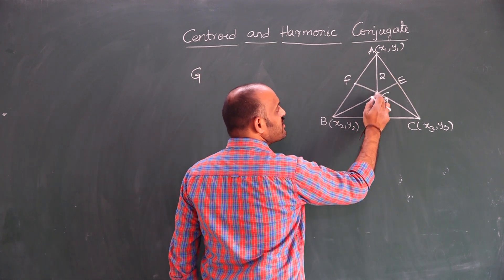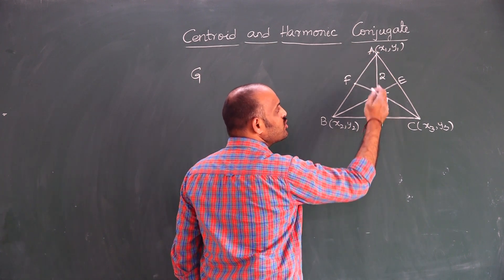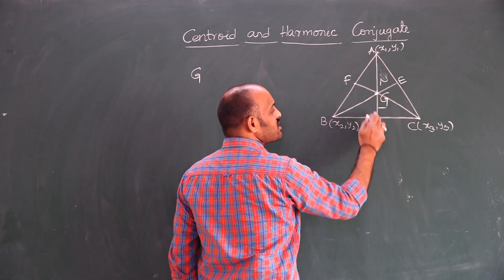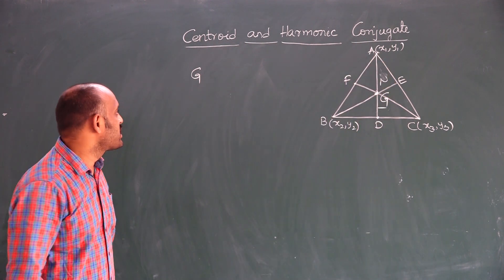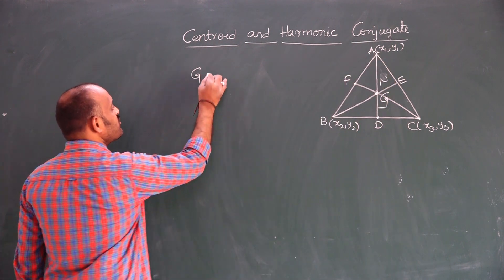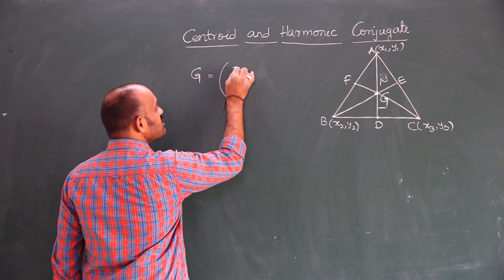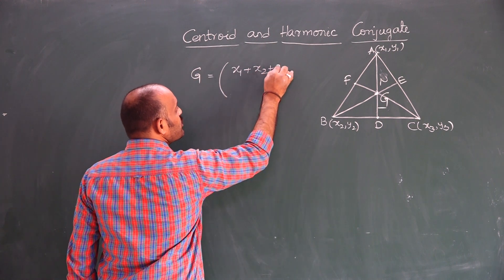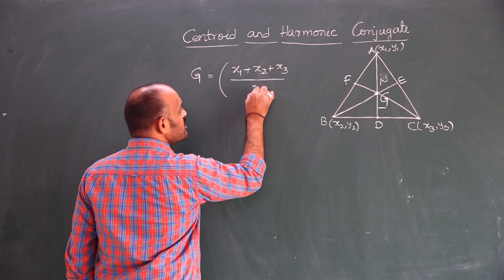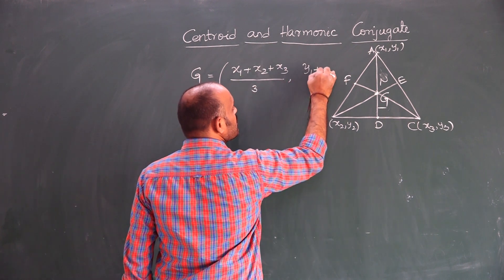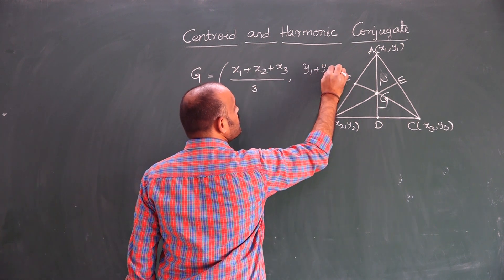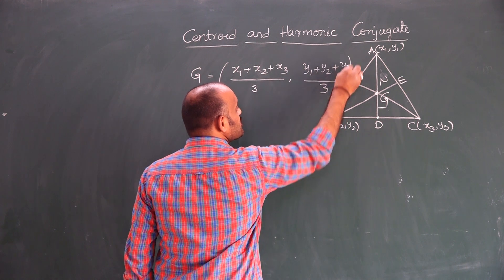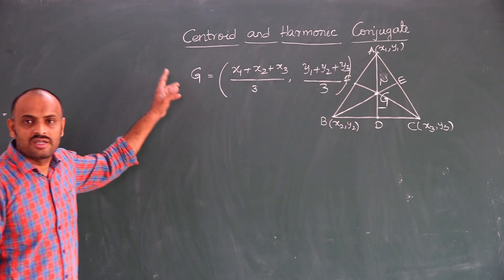The centroid divides the median in the ratio 2:1 from the vertex to the opposite side. Therefore, the coordinates of Z are: x1 plus x2 plus x3 by 3, comma y1 plus y2 plus y3 by 3. These are the coordinates of the centroid.